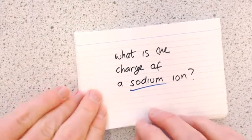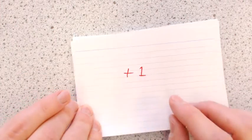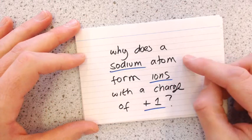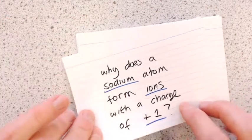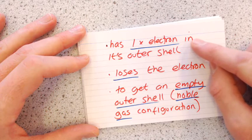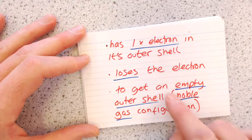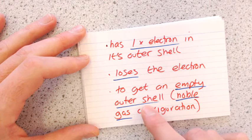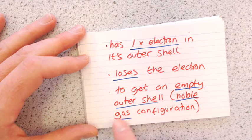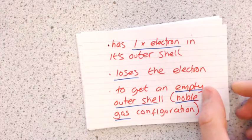What's the charge of a sodium ion? It's plus one, because it's losing a negative electron, so it ends up with a plus one charge. Why does a sodium atom form ions with a charge of plus one? It's got one electron in its outer shell. To get an empty outer shell it loses that one electron, achieving a noble gas configuration — that's why it becomes stable with a full or empty outer shell.